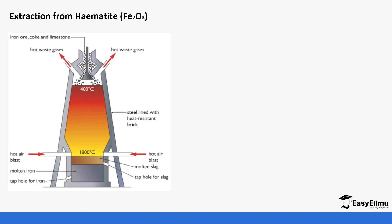How do we extract iron? The extraction of hematite is done through a blast furnace. As previously discussed, different metals are extracted differently — electrolysis is used for metals high in the reactivity series, while reduction is used for metals lower in the reactivity series, including iron. We use a blast furnace to carry out the reduction of hematite to form iron.